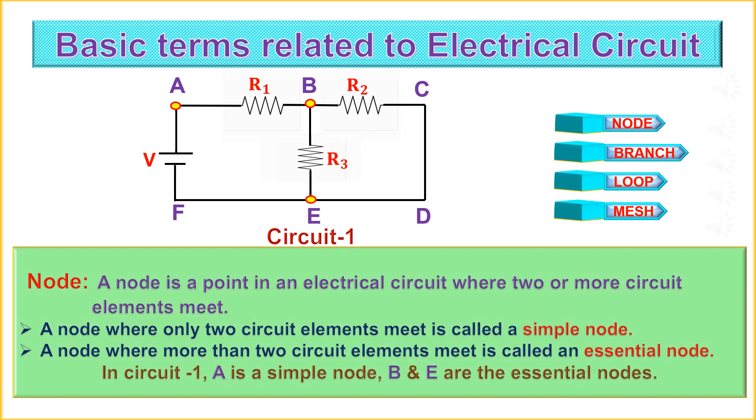A node is a point in an electrical circuit where two or more circuit elements meet. A node where only two circuit elements meet is called a simple node. A node where more than two circuit elements meet is called an essential node. In circuit 1, A is a simple node but whereas B and E are the essential nodes. In circuit 1, F, E, D and C are all common points hence anyone can be taken as a node.